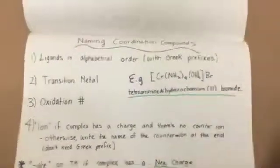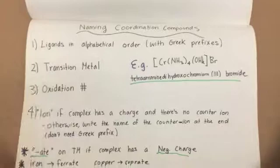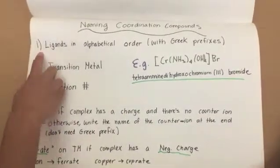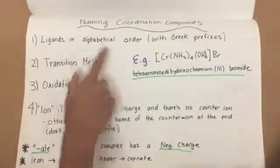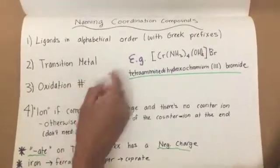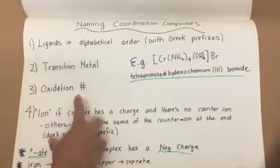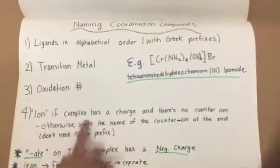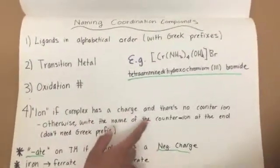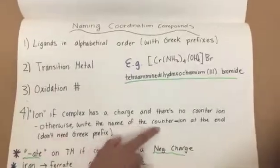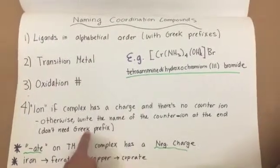When naming coordination compounds, there is a certain order you need to follow. First, you want to name the ligands in alphabetical order with their Greek prefixes. Next, you want to name the transition metal, followed by its oxidation number. And finally, add the word ion if the complex is a charge and there's no counter ion. Otherwise, write the name of the counter ion at the end and you don't need a Greek prefix.